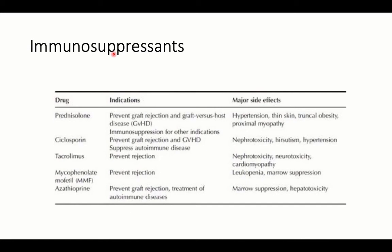Immunosuppressant medications are given for different causes including post-stem cell transplantation, leukemia, and autoimmune conditions. Corticosteroids are given post-transplant to prevent graft-versus-host disease. Cyclosporine is an immunosuppressive drug used to prevent graft-versus-host disease and in autoimmune diseases, but can be complicated by nephrotoxicity, hirsutism, and hypertension.